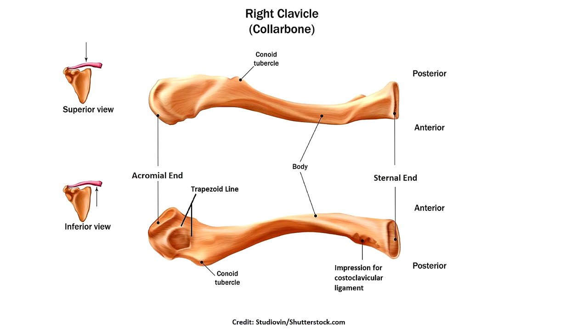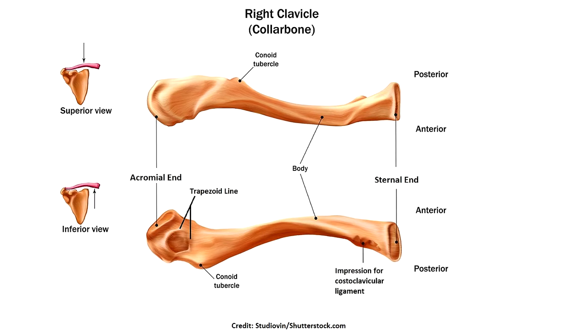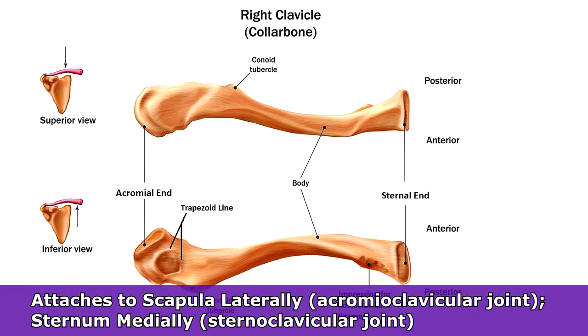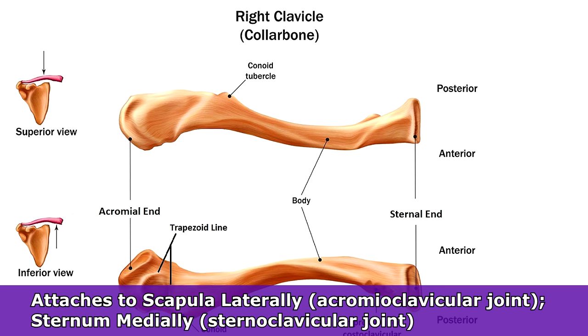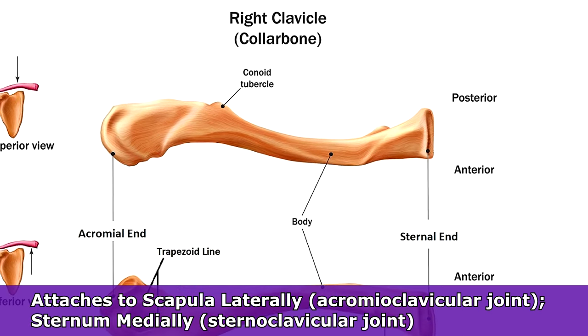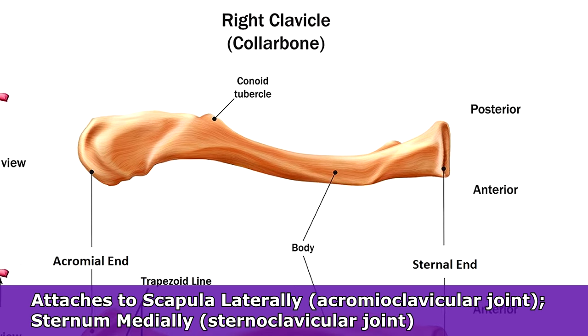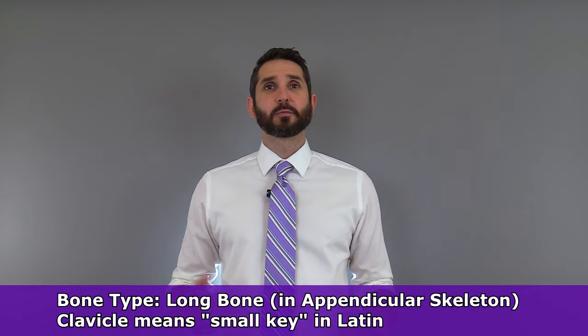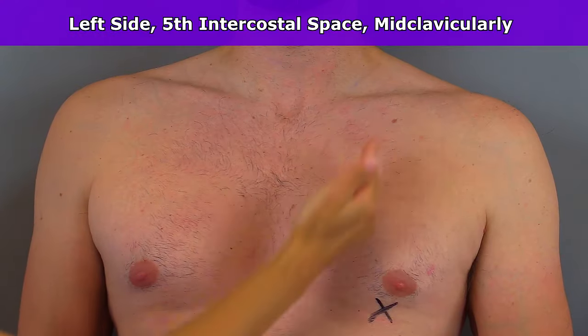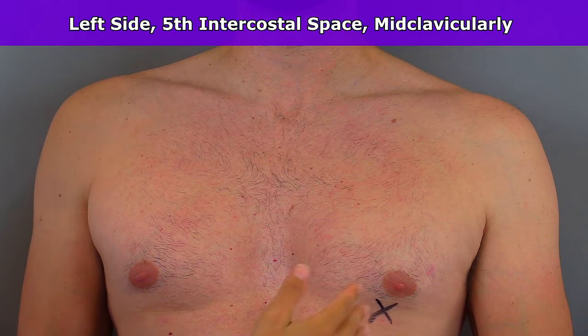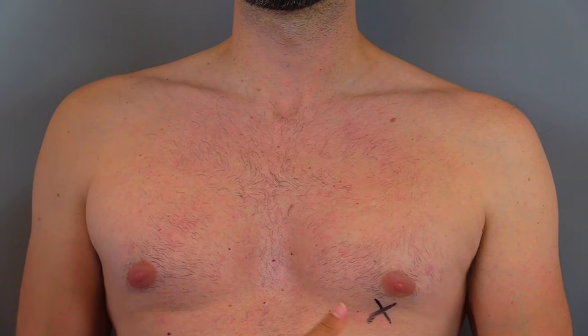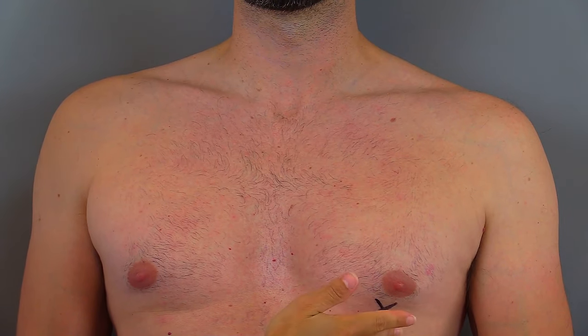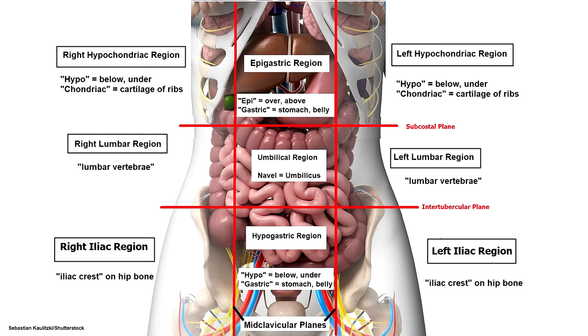The clavicle bone, also called the collarbone, is a small curved bone that sits horizontally on each side of the superior thorax. It attaches to the scapula laterally at the acromioclavicular joint and the sternum medially at the sternoclavicular joint. Anatomists classify the clavicle as a long bone, and it gets its name from a Latin word meaning 'small key.' The midclavicular line is an imaginary line that runs down the body from the middle of the clavicle, used to determine the location of the apical pulse as well as the two vertical lines that make up the nine abdominal regions.